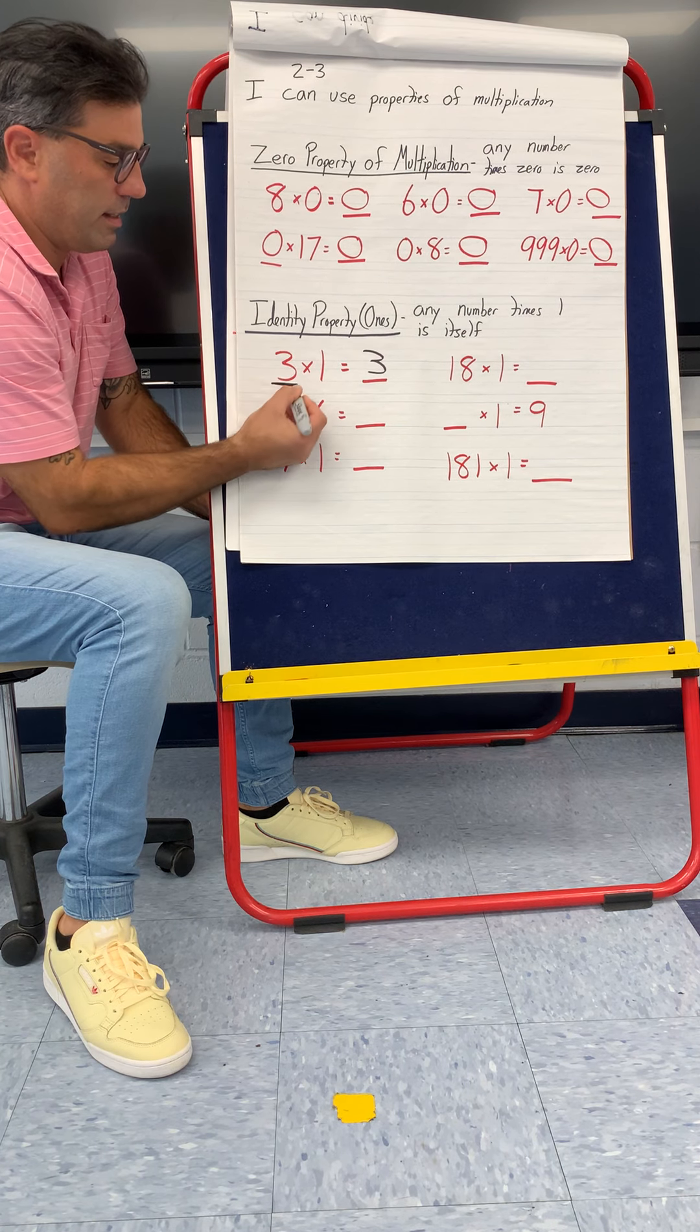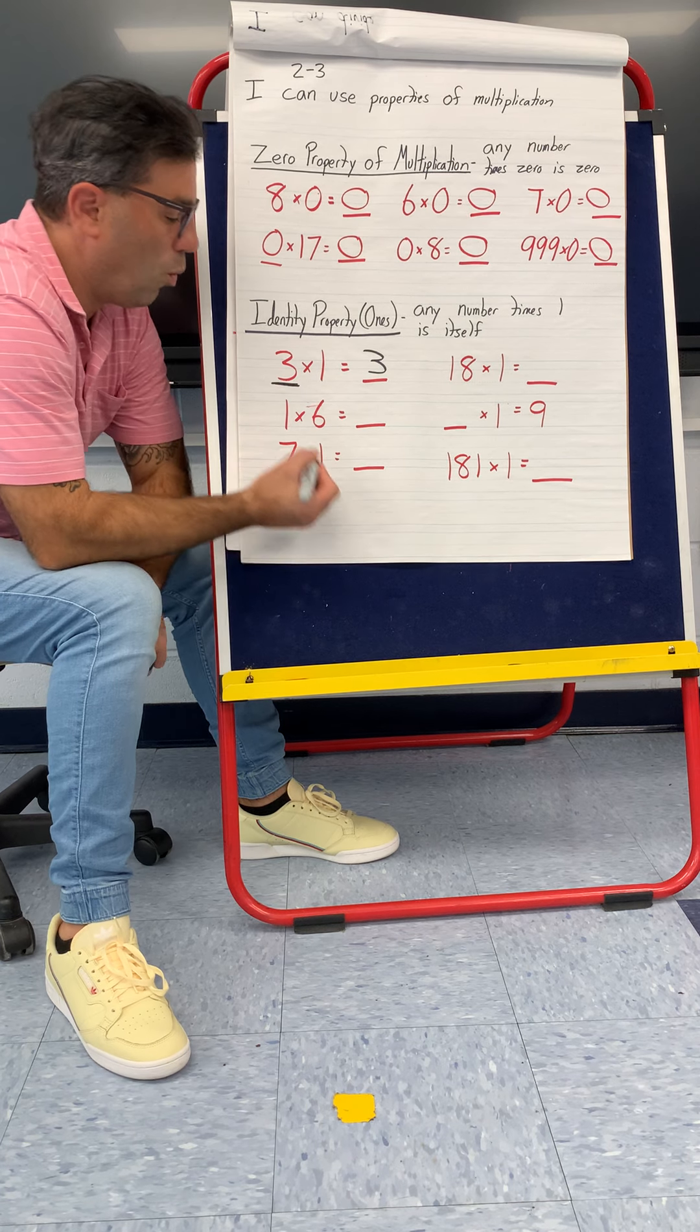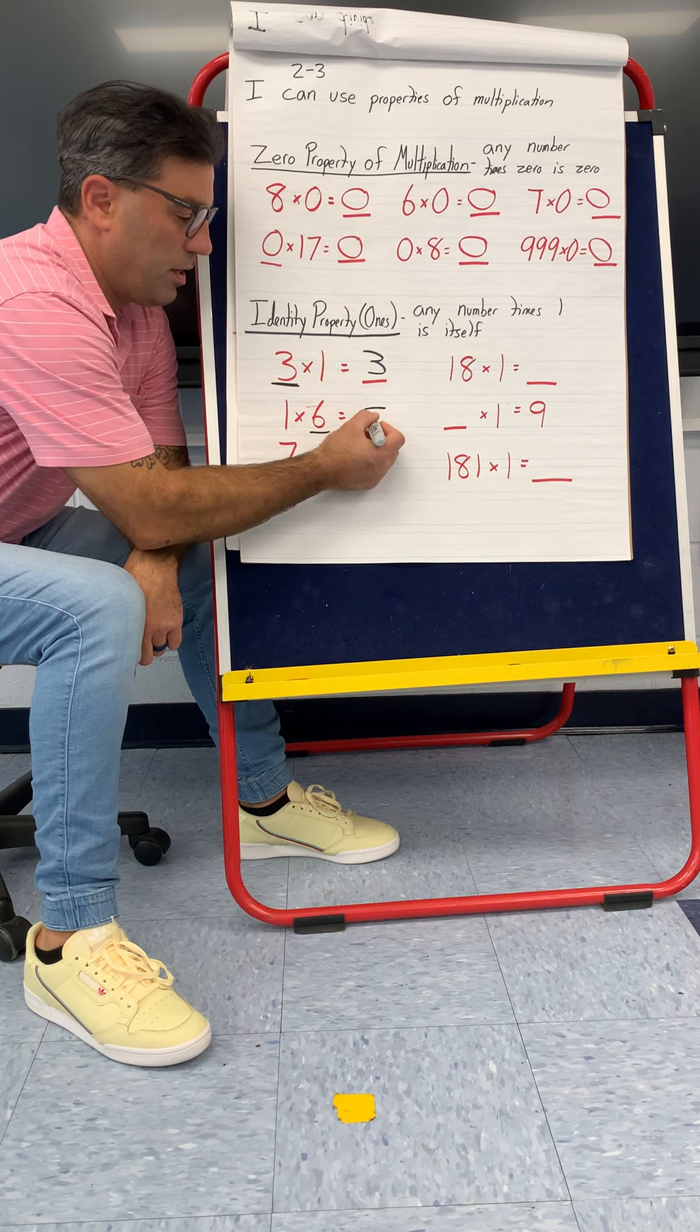So any number times one is itself. Like three groups of one is three, or one group of six is just the other number, six.